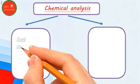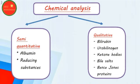In chemical analysis, we again sub-categorize into two groups: semi-quantitative and qualitative. In semi-quantitative we include albumin, proteins, and reducing substances, which we have completed in the previous chapter. For qualitative analytes, we include bilirubin or bile pigments, urobilinogen or bile pigment derivatives.